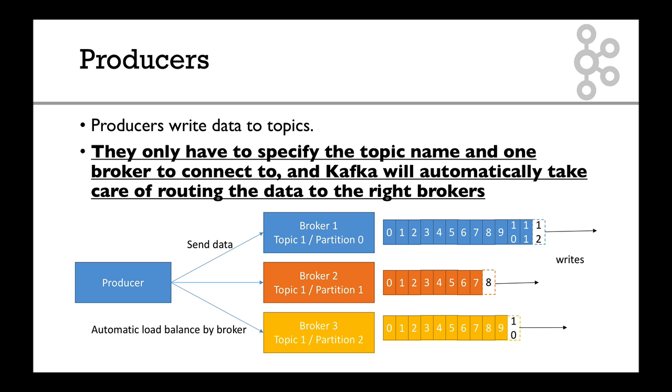So look at the graph in the bottom. We have our producer and he wants to send data to topic 1. It connects to one of the brokers and automatically it's connected to all of them. Now it sends data and as we saw before, the data will be randomly assigned to a partition, therefore it will send data to partition 0, partition 1 and partition 2, which brings some load balancing.